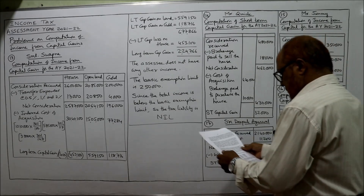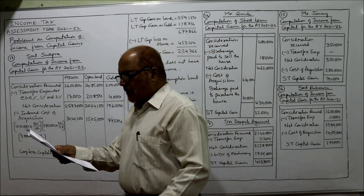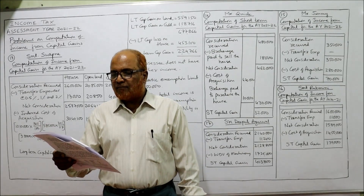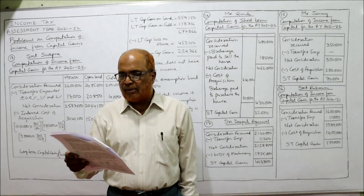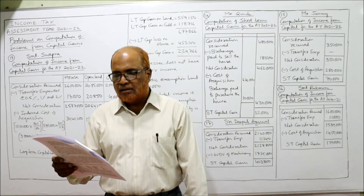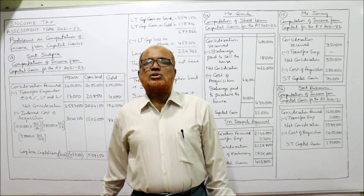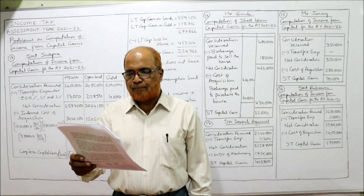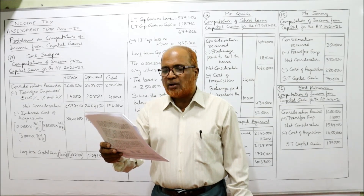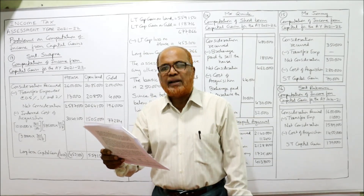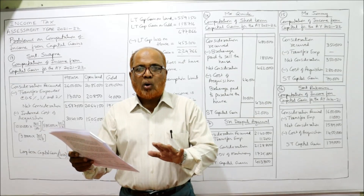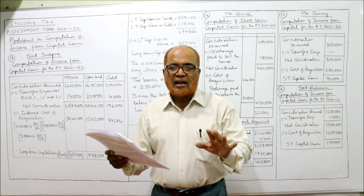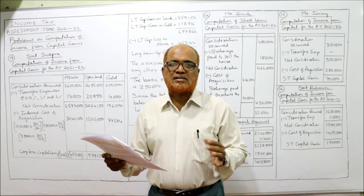See the 13th problem. During the previous year relevant to the current assessment year, Srimathi Sopana sold the following assets. We are required to compute the income from capital gain and tax liability. The income under other heads is nil for the current assessment year. The particulars given are: house let out for commercial purpose, open land in city, and gold — all three are capital assets and the gain arising on their sale is fully taxable.